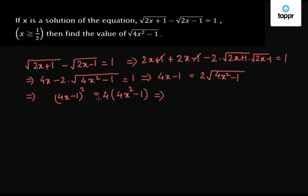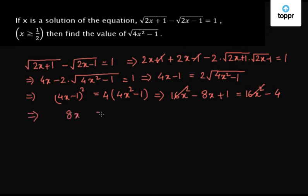Now expanding the terms inside the square, we get 16x squared minus 8x plus 1 equals to 16x squared minus 4. So the 16x squared gets cancelled on both sides, and we are left with 8x equals to 5, which implies x equals to 5 by 8.